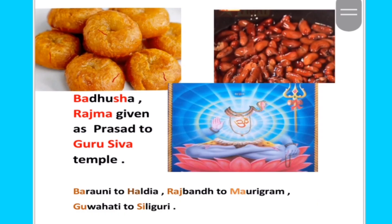The next mnemonic: 'Badusha and Rajma given as Prasad to Guru Shiva Temple.' Ba stands for Baroni, Shah/Hache stands for Haldia, Raj stands for Rajman, Ma stands for Mauregram, Ju stands for Kaukathi, and Si stands for Silkuri — these are pipeline branch locations.